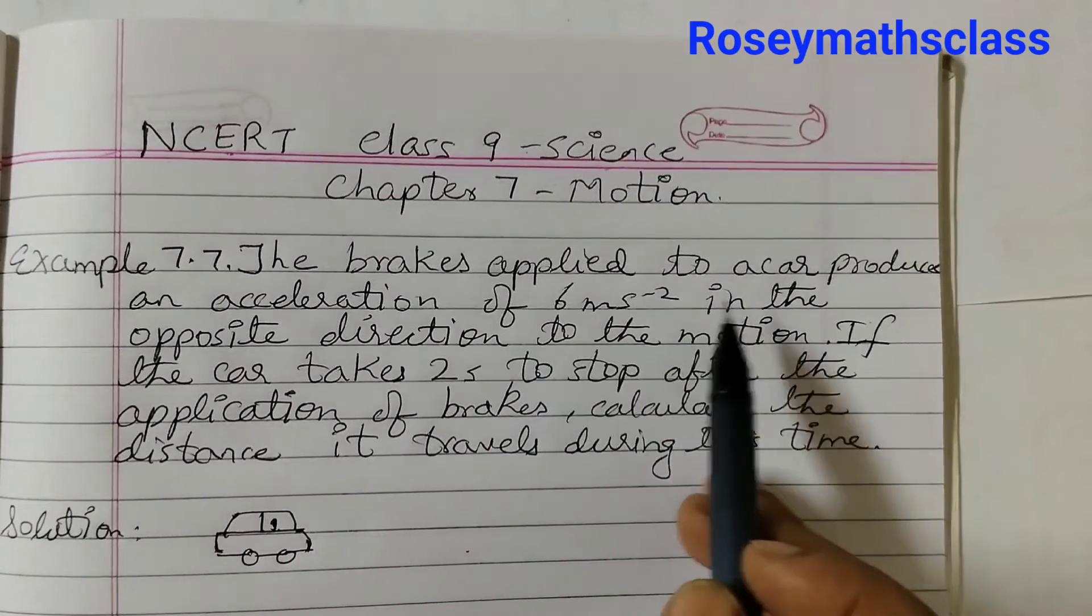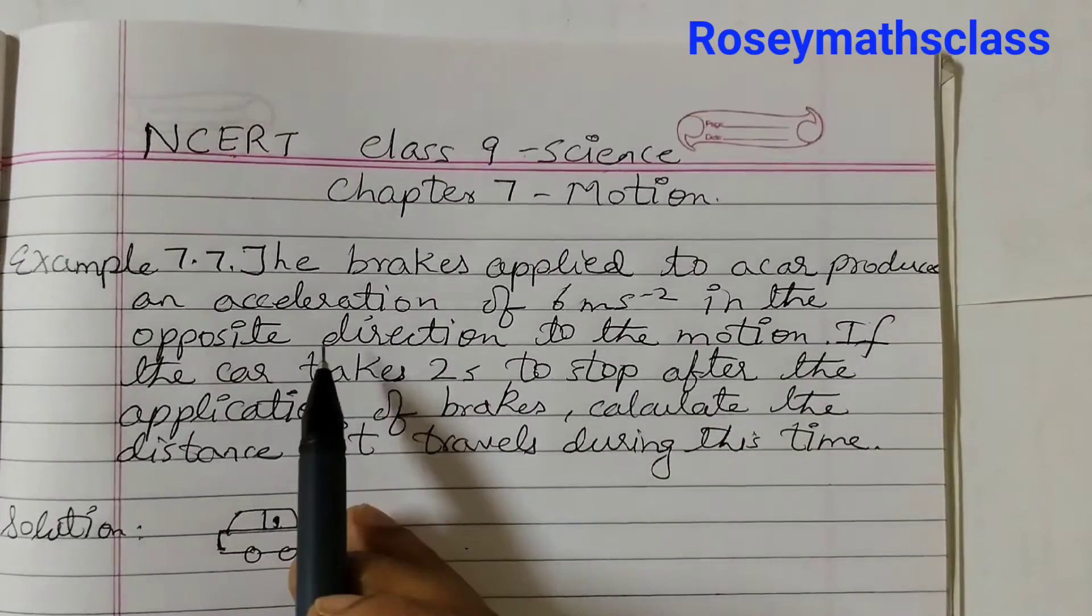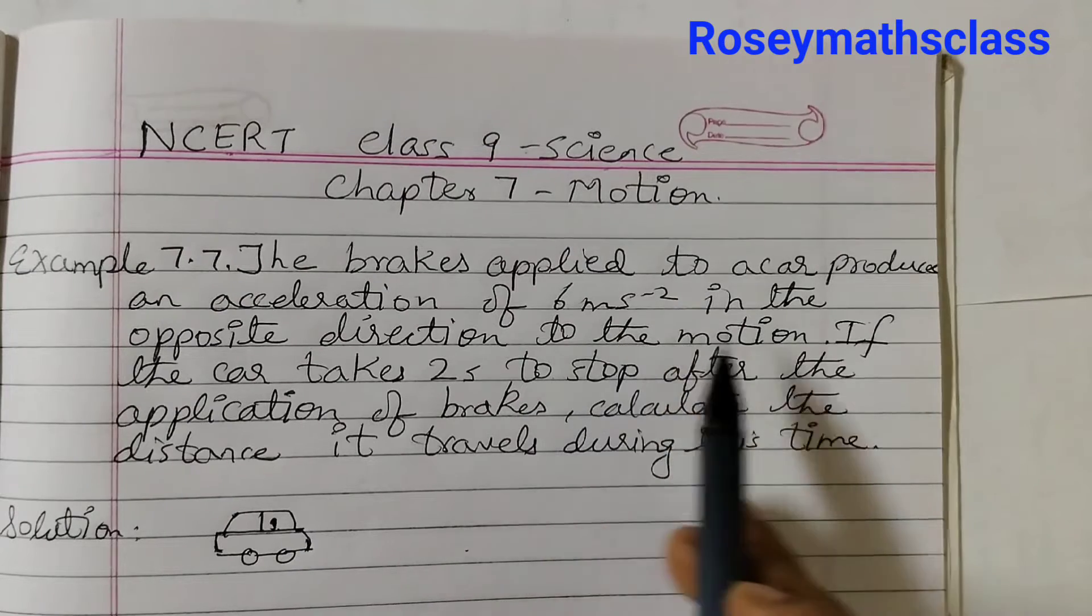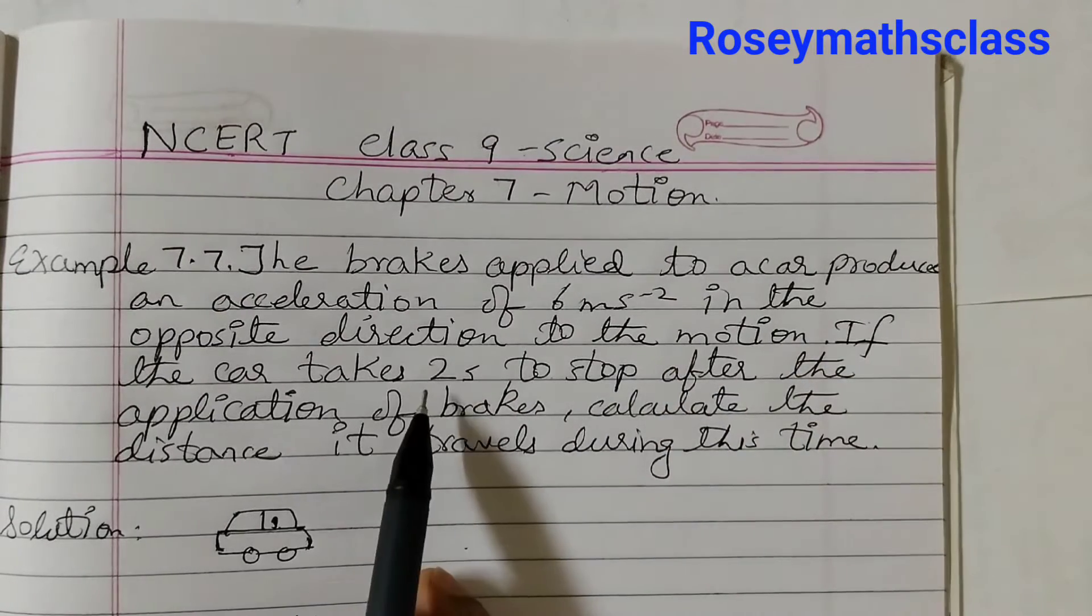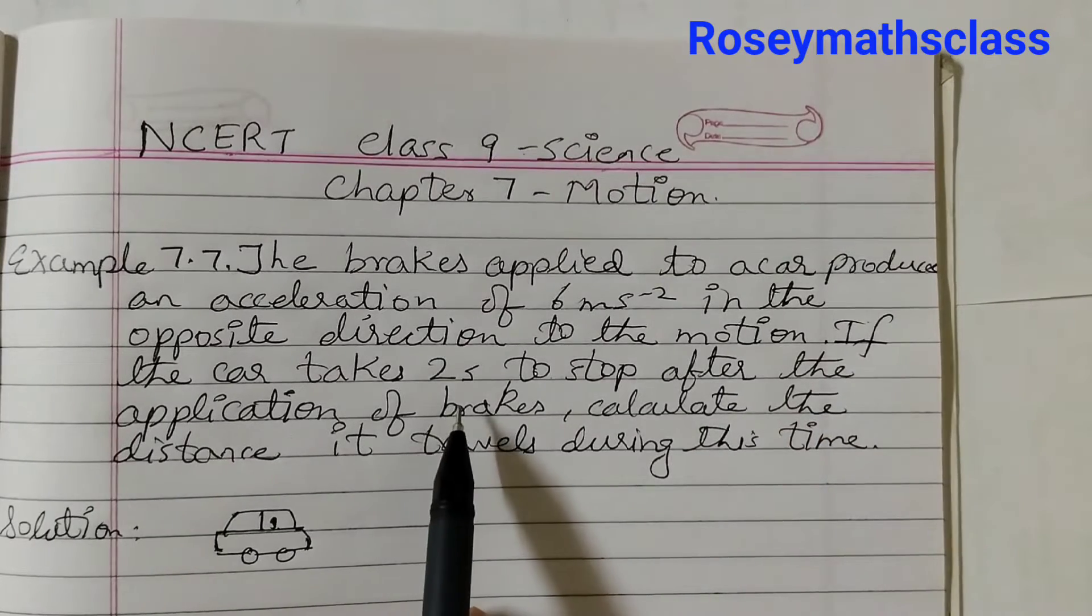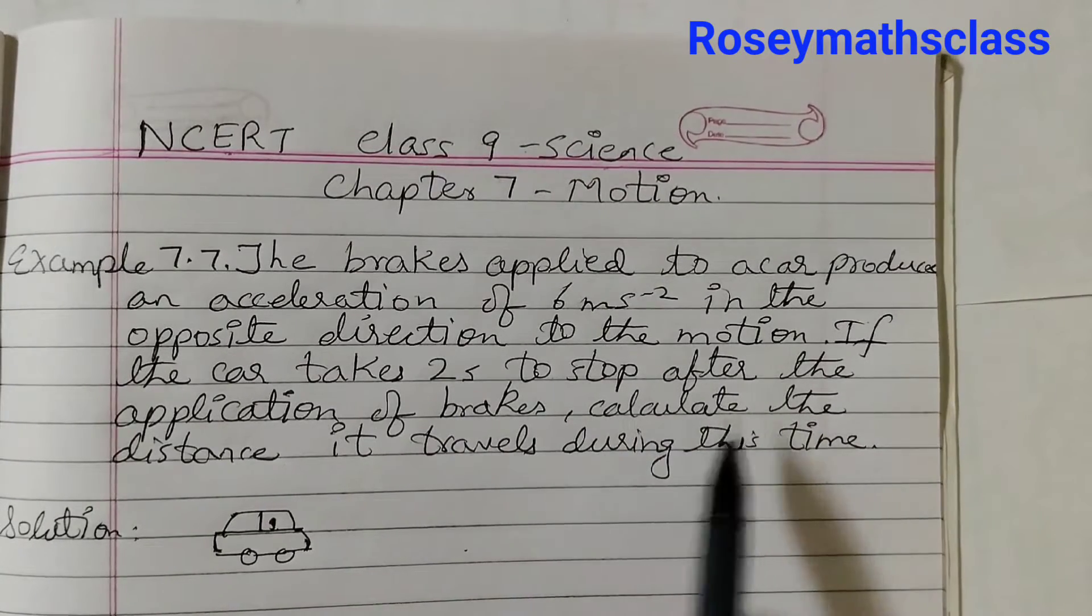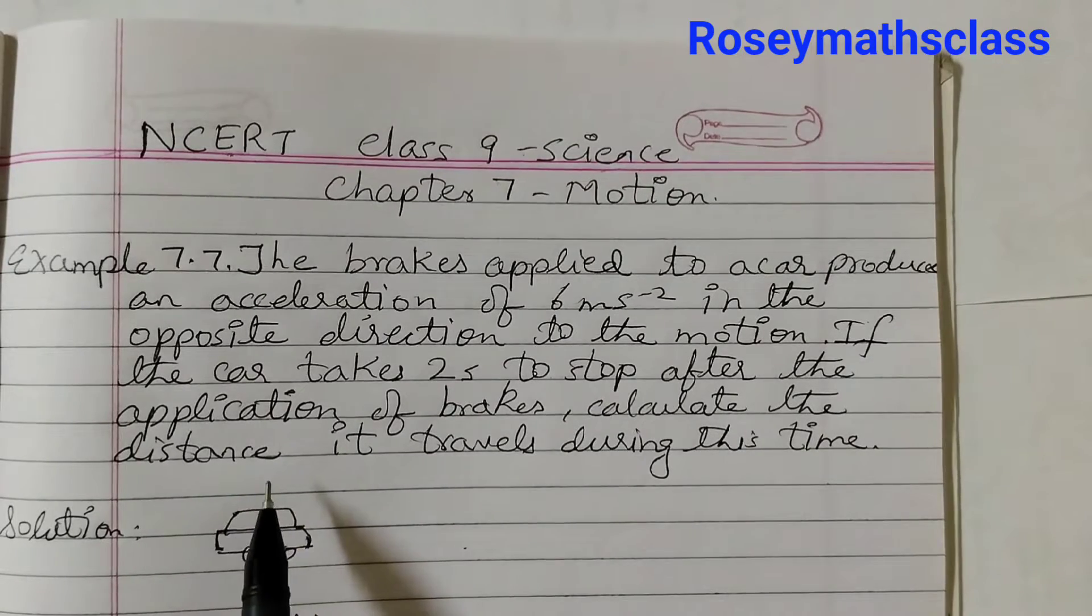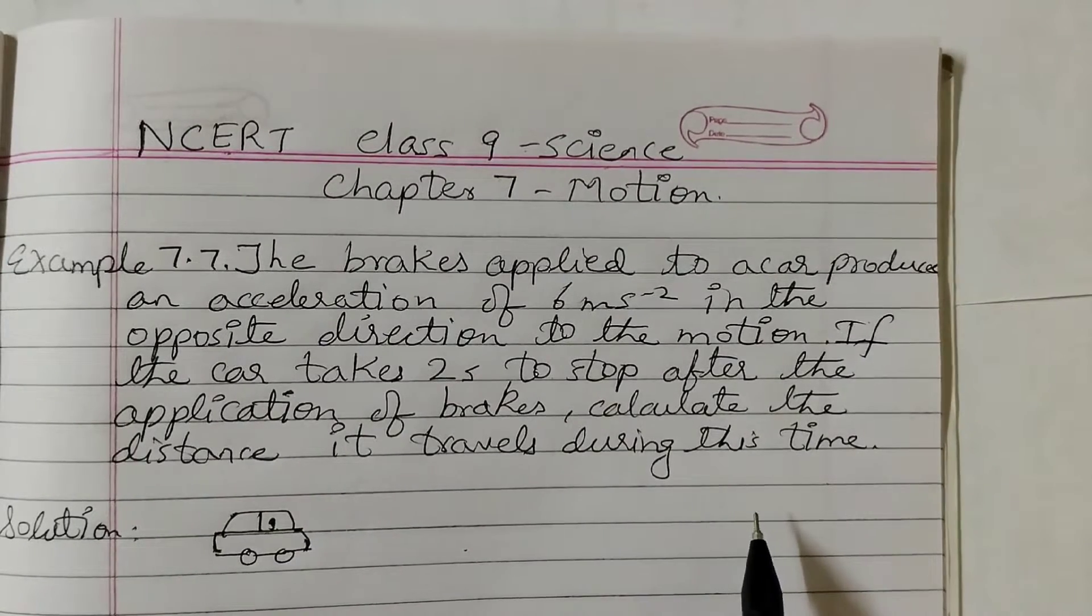The brakes applied to a car produces an acceleration of 6 meters per second squared in the opposite direction to the motion. If the car takes 2 seconds to stop after the application of brakes, calculate the distance it travels during this time.